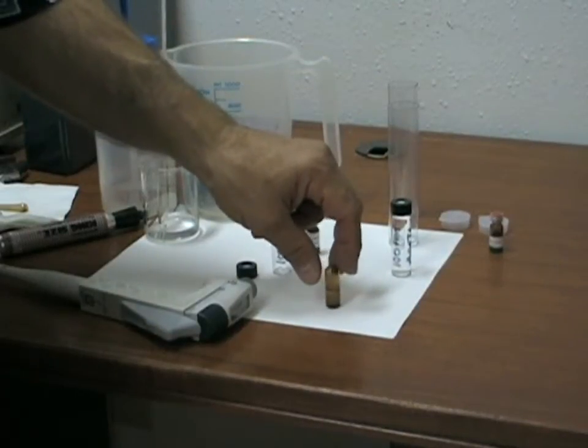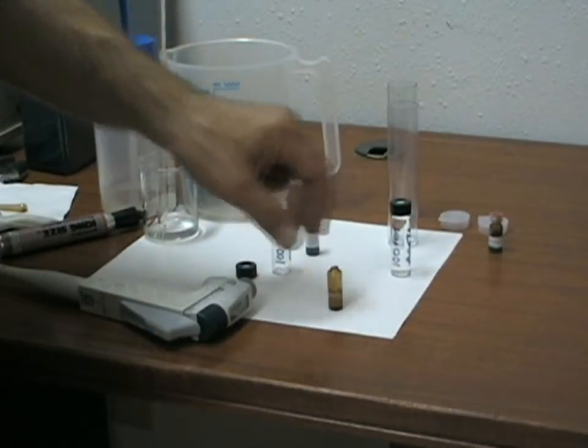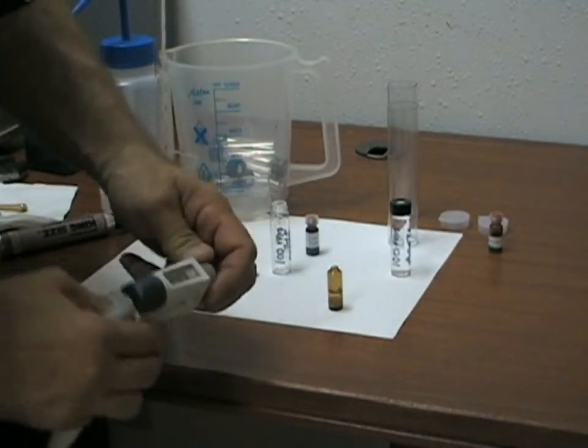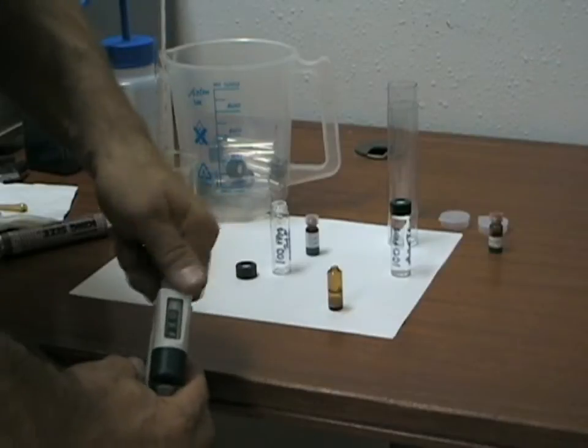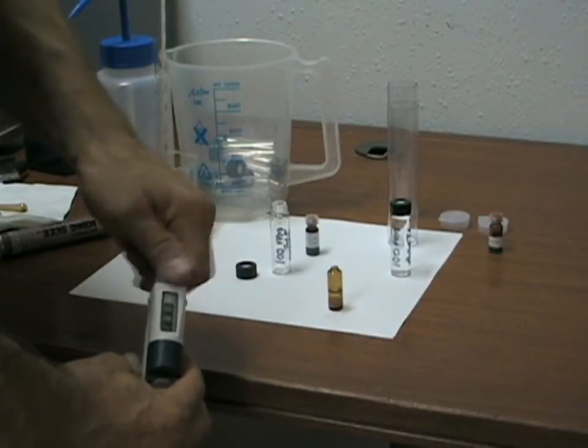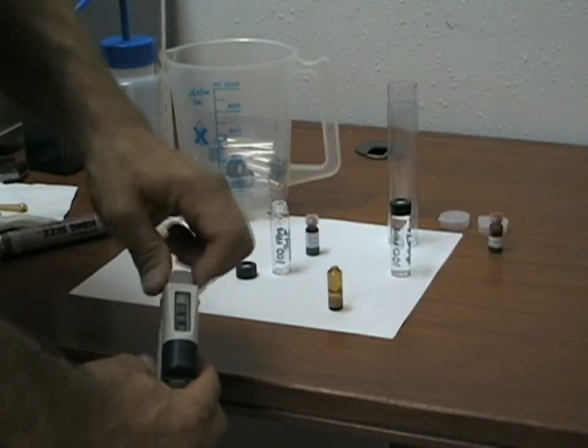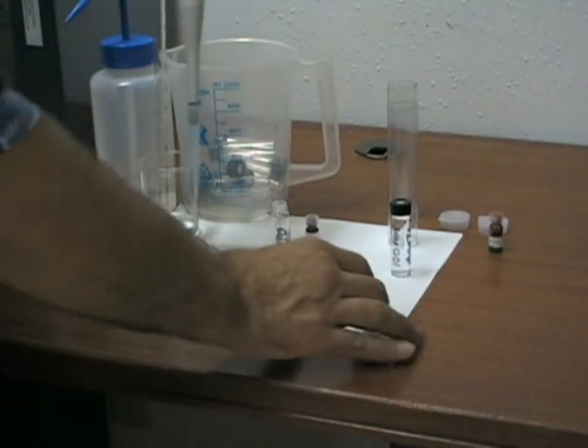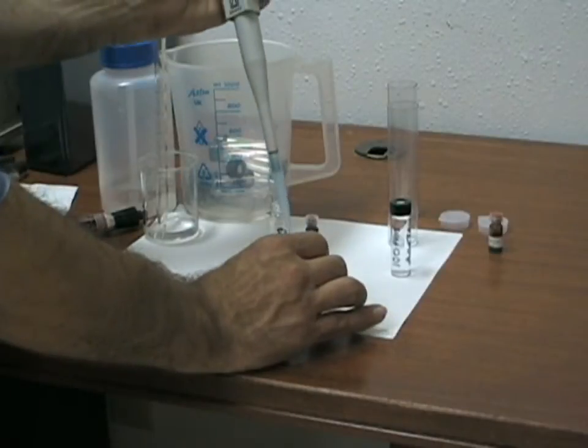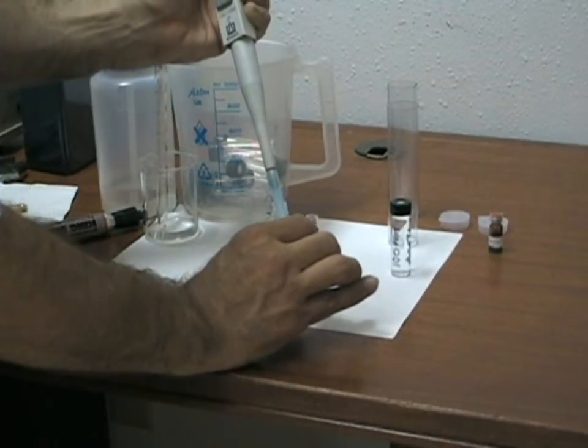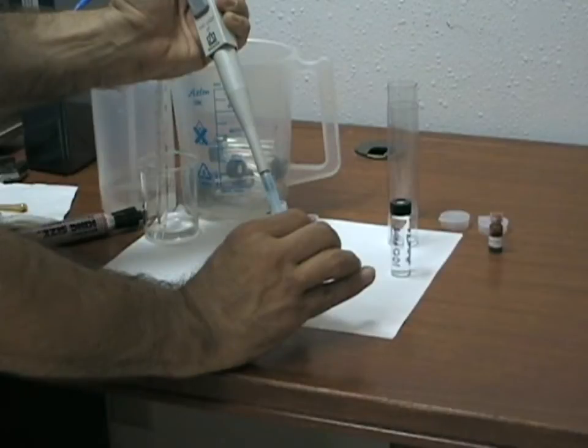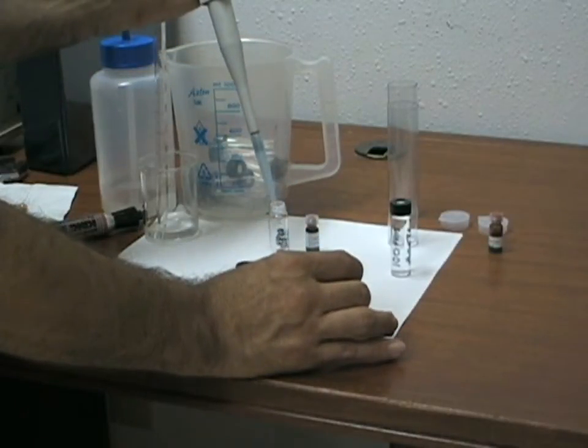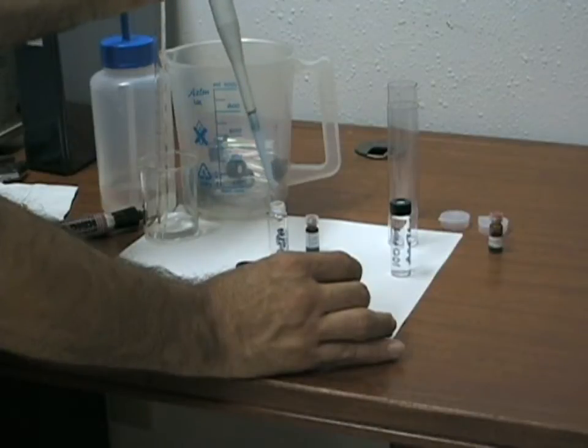This is a 2,000 part per million standard concentrate. We need to do a 1 to 20 dilution. So we set our pipette to 0.5 milliliters, one half a milliliter, and we will carefully measure out 0.5 milliliters of the standard into our vial.